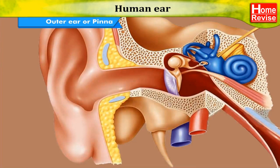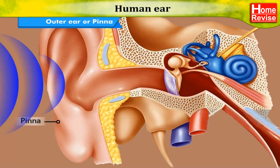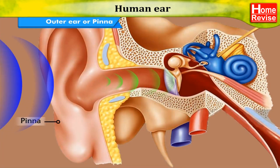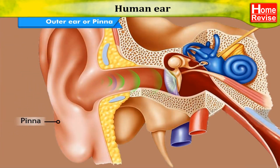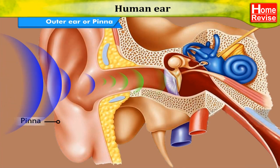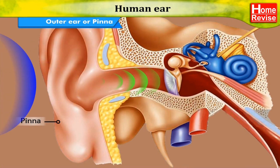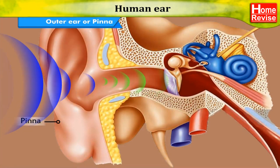The outer ear collects the sound waves and passes them through a tube to a cavity in the middle ear. Its peculiar funnel-like shape helps to collect and pass sounds into the middle ear.